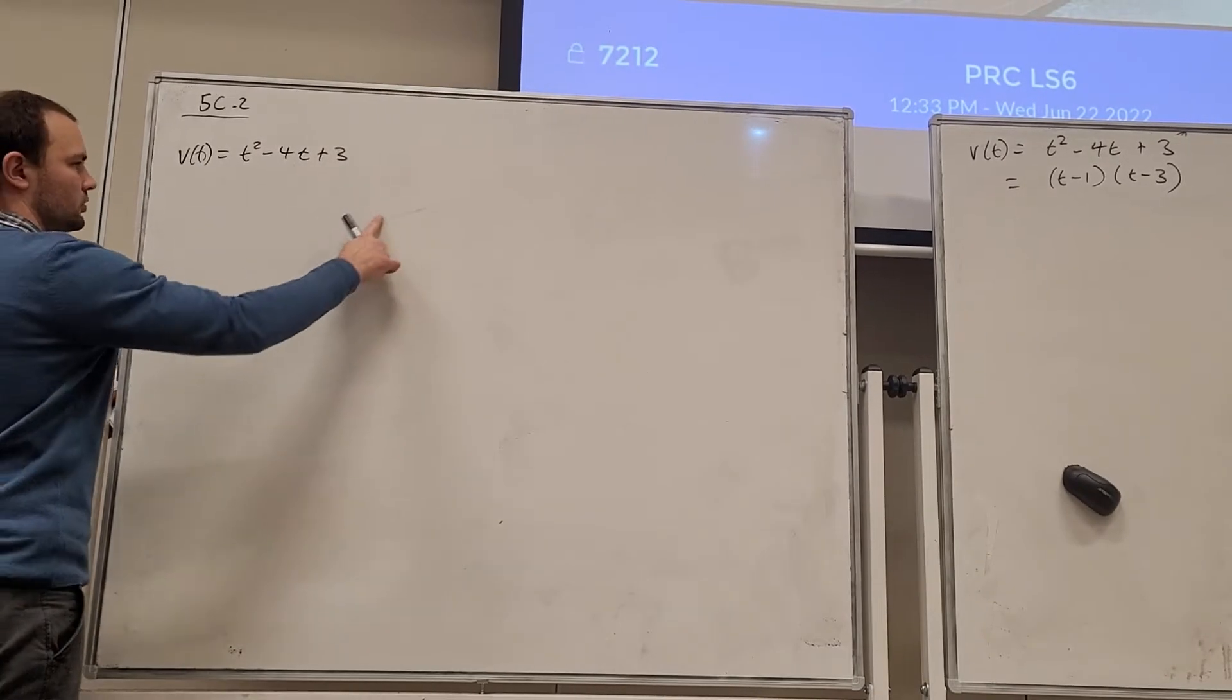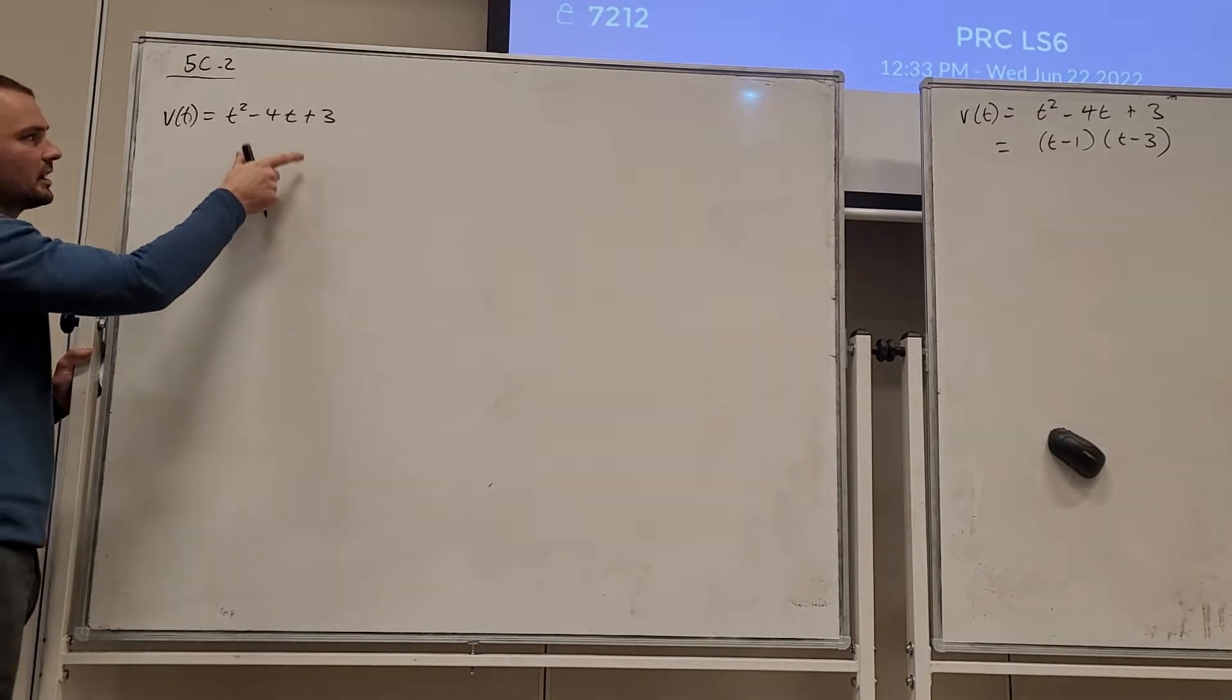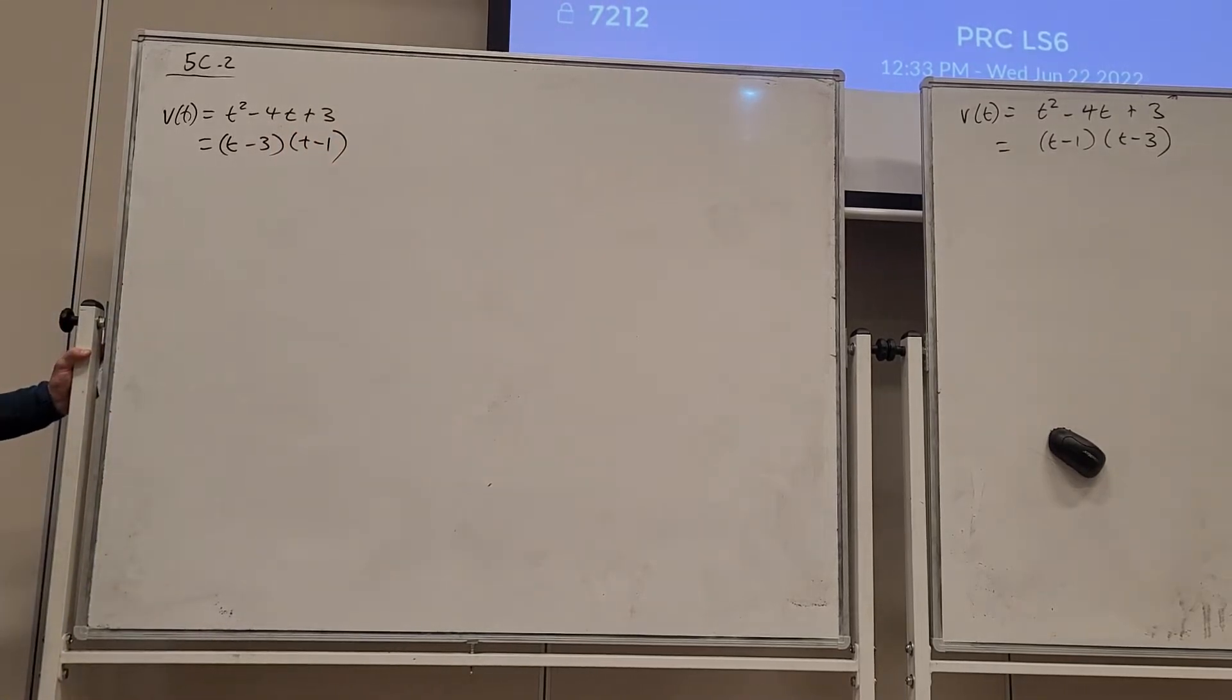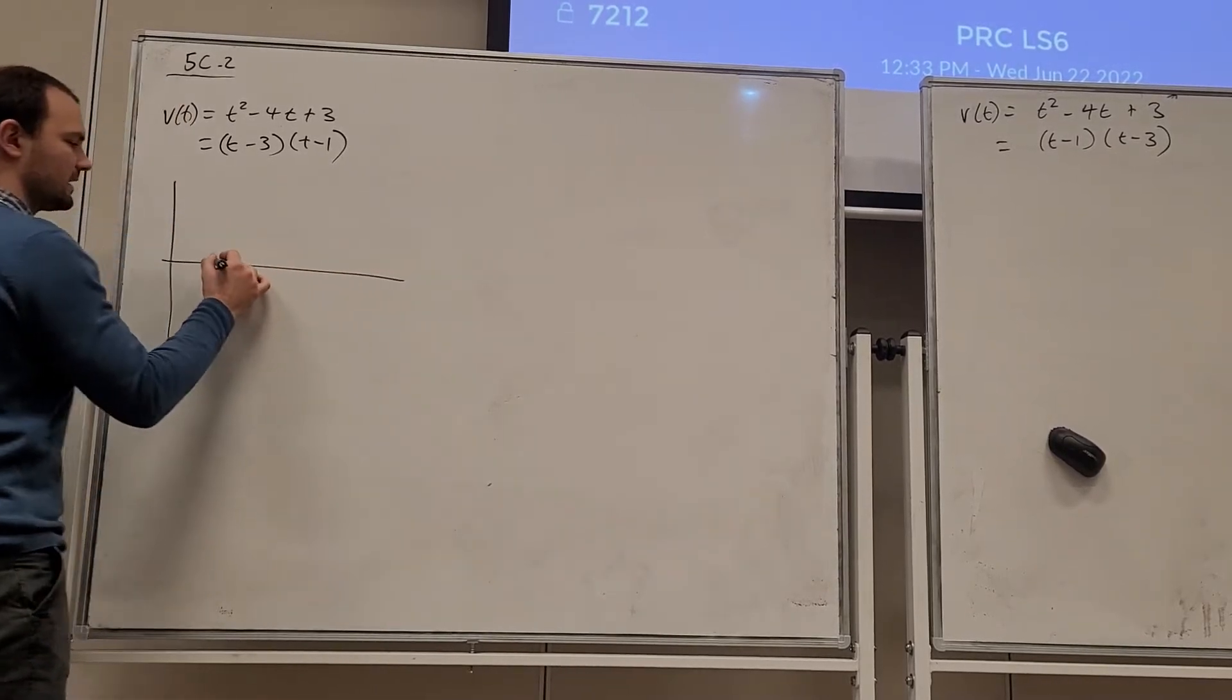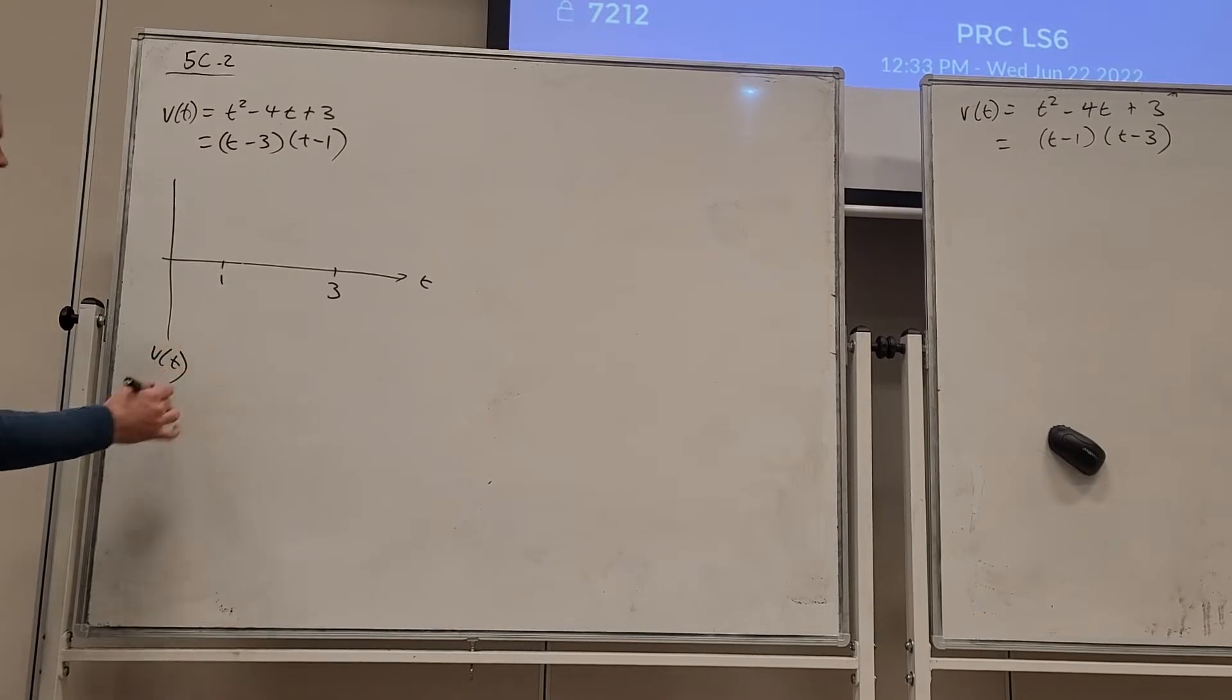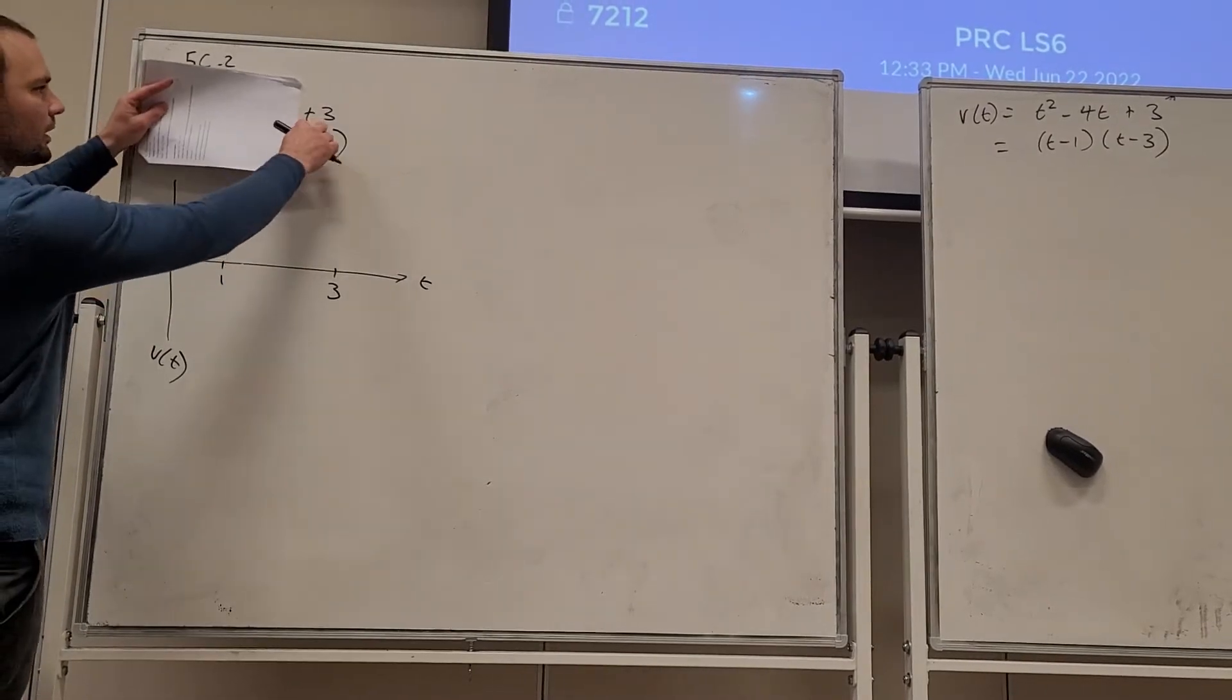If you want to graph this function, maybe looking at it like that, we can't really graph it. But one thing we can do is factorize it. We can express this as (t-3) and (t-1) as two linear factors. Now you can see what the roots are. It crosses the x-axis at 1 and positive 3. This is time, this is the velocity with regards to time. We also know that the y-intercept is positive 3, when time is zero we're going to have 3.